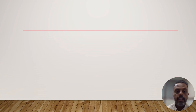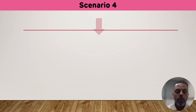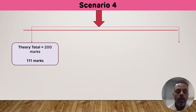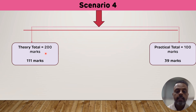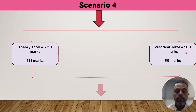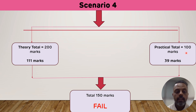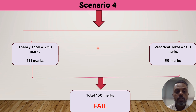Scenario number four: if a student has secured 111 marks out of 200 in theory but only 39 marks out of 100 in practical — even though the aggregate is 150 — he or she is declared as fail because in the practical the student failed to secure the minimum 40%. This new 60-40 or 40-60 rule is applicable for all batches of MBBS. Whosoever gives the MBBS exam after publication of this rule must follow it.